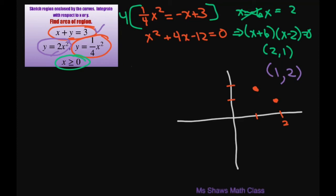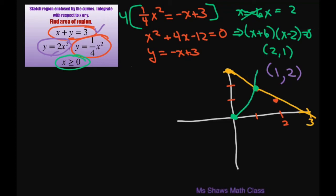The first one we have is x plus y equals 3, or y equals negative x plus 3. So we're going to go up to 3 here and since it's negative, it goes down to 3 on the other axis — there's that line. The second one we have is y equals 2x squared, so that means we start at 0, and at x equals 1 it goes up to 2. It's that quadratic that goes up this way.